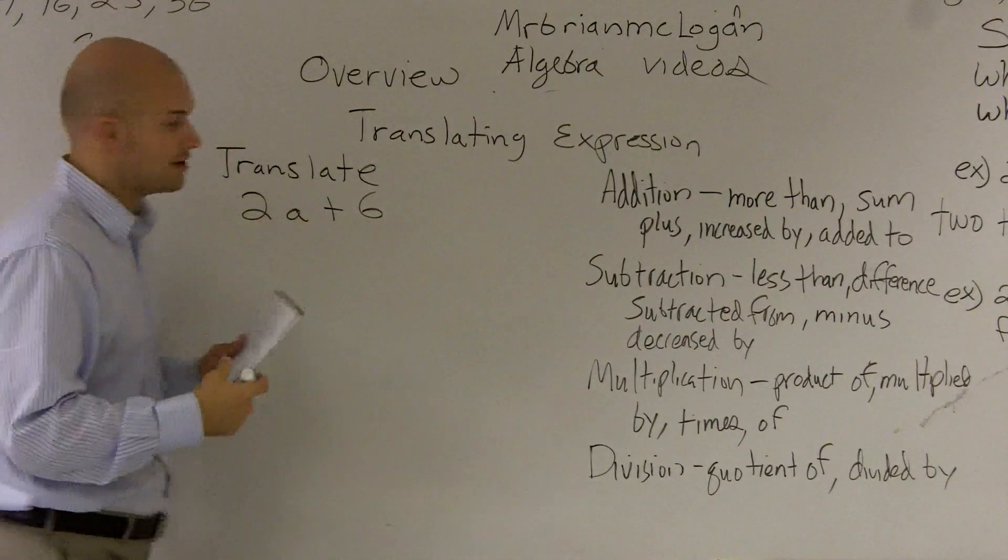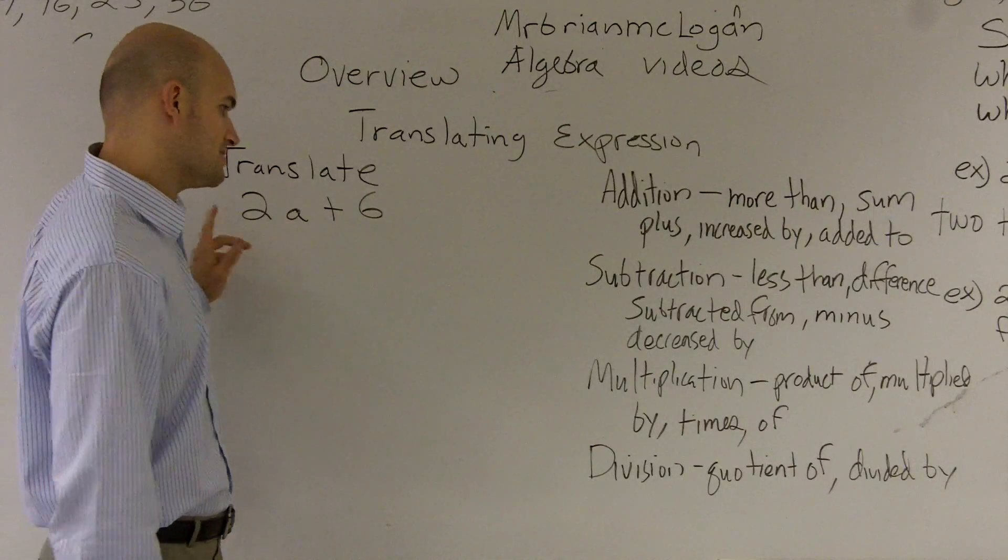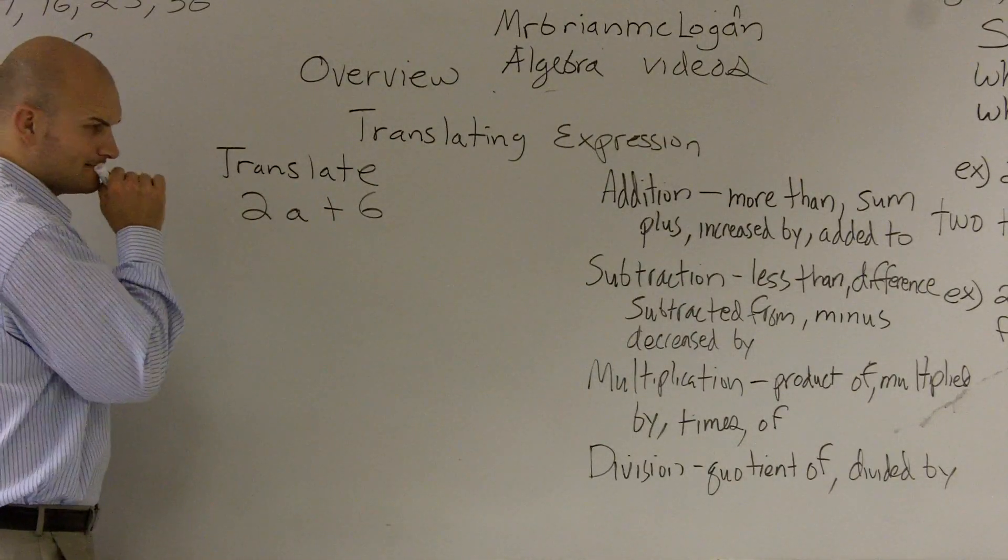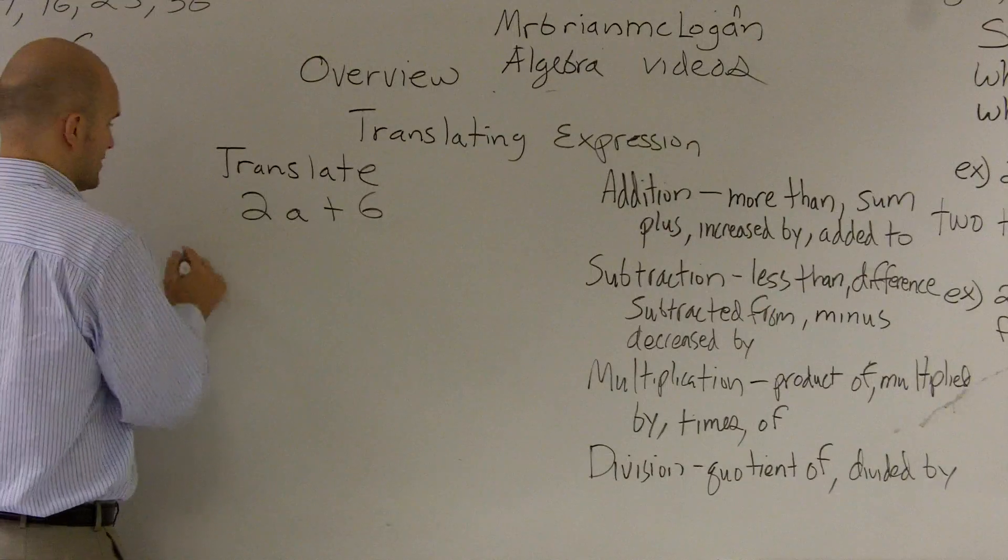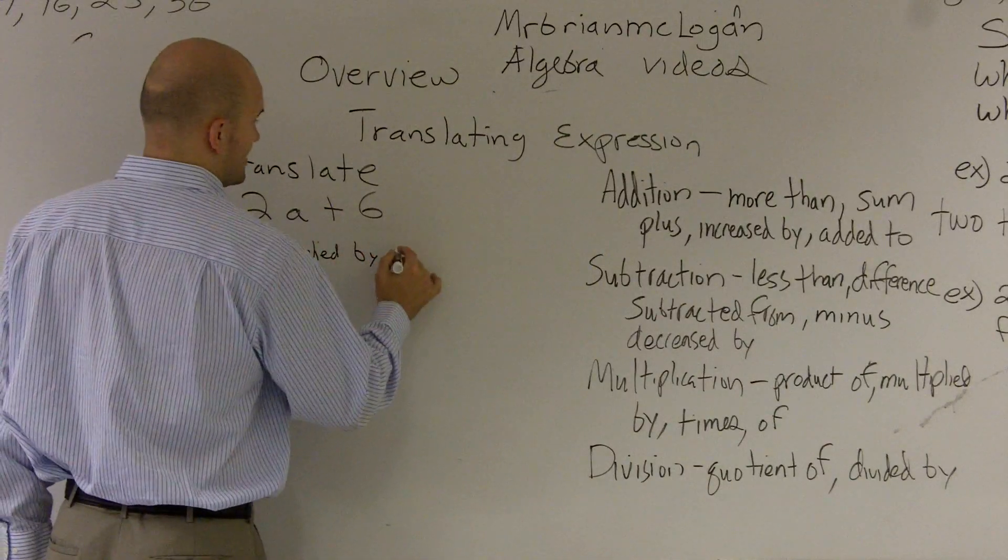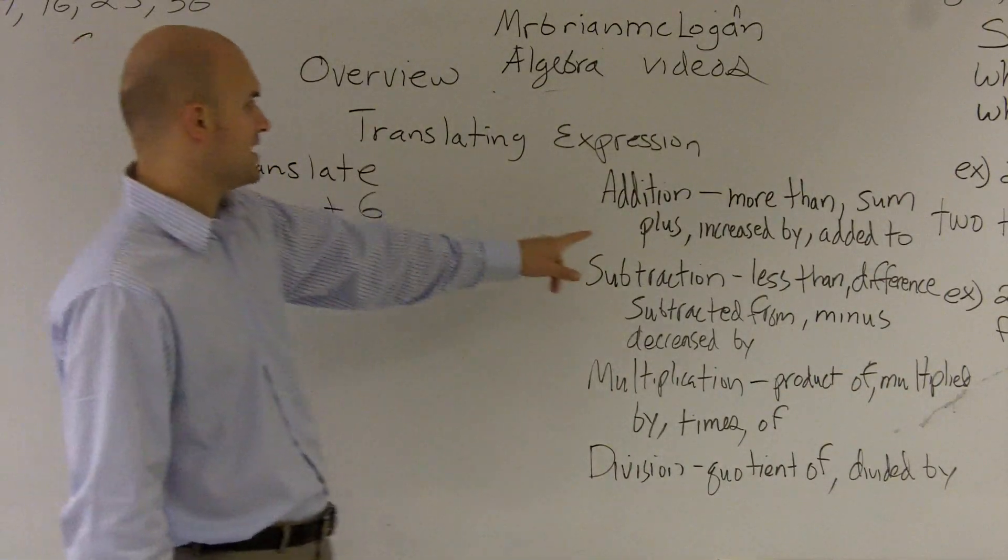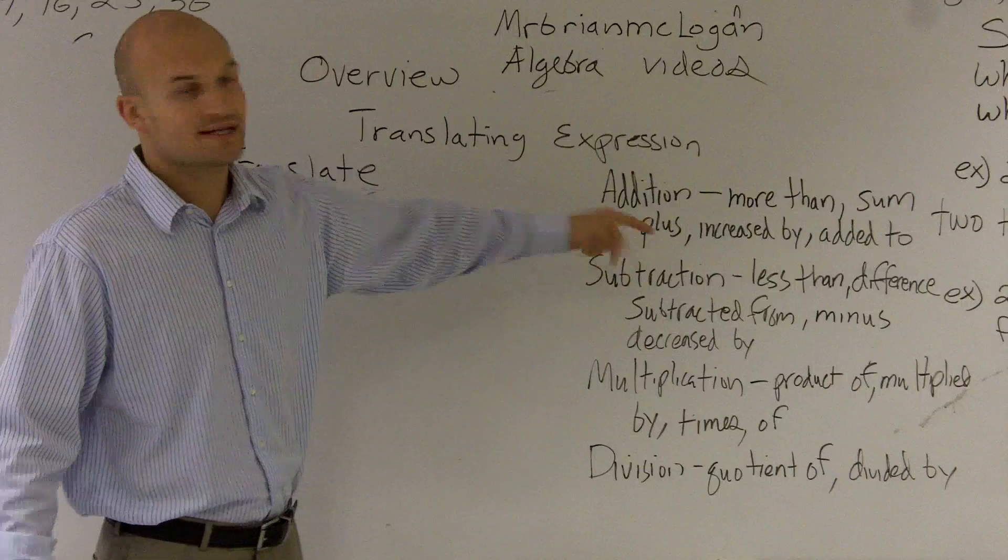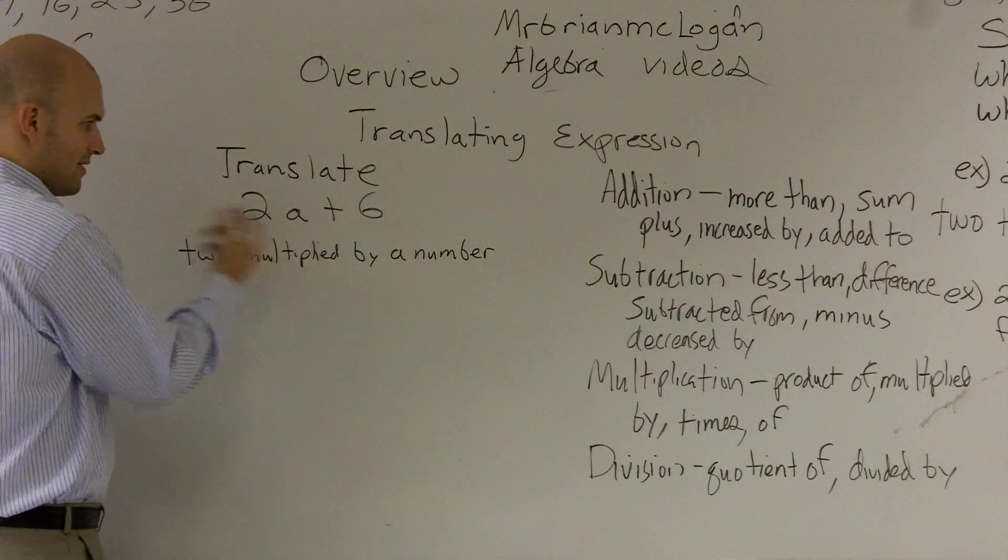So we could say the product of 2 and a number. You could say 2 multiplied by a. You could say 2 times a number. Or you could say 2 of a. Well, 2 of a. Let's go and see. So I'm just going to say 2 multiplied by a number. And then I'm going to use addition. So I could say more than 6. You could say increase by 6 or add it to 6. You could also say plus 6. Or you could just say, you know, the sum of 2 times a number and 6, but I would have to write that first.